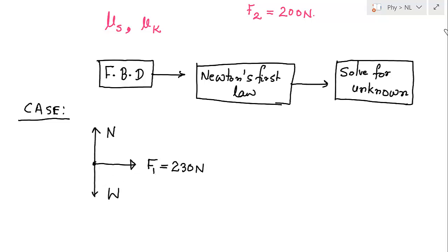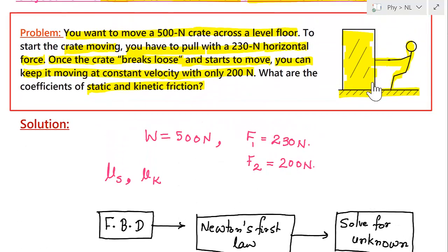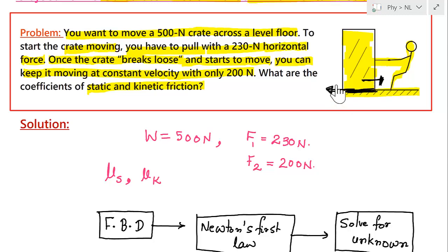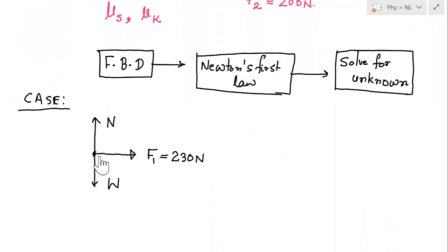The floor on which the crate is kept — if you try to pull in this direction, the crate will not move because there is a friction force acting between the surface and the crate that opposes the motion. So friction acts in the opposite direction to the applied force. We call this friction force f1, and its magnitude is μs times N, because the crate is not moving, so we use the coefficient of static friction.